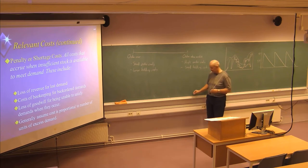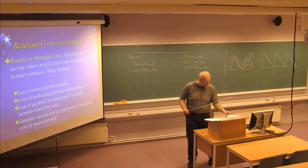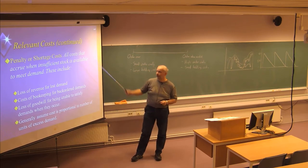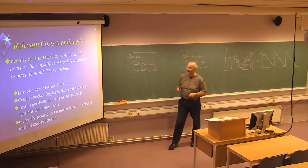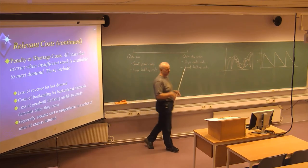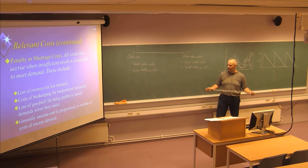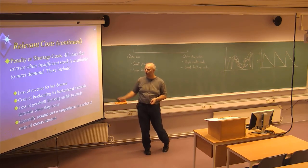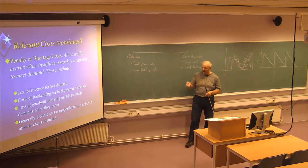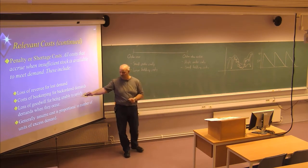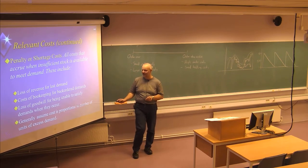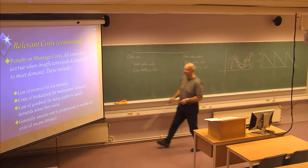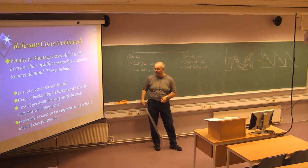We should also mention the penalty or shortage cost, which accrues when insufficient stock is available to meet demand. This includes the loss of revenue for a lost demand — you will not get the profit of selling that product. There is also the cost of bookkeeping for back-ordered demands. And the loss of goodwill for being unable to satisfy demand when it occurs — if the customer comes to your store and you are out of stock, they might not come back. Generally, the cost is assumed proportional to the number of units of excess demand.